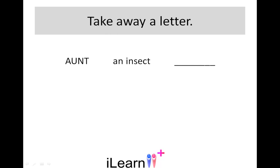Now look at this variation. You need to take away a letter instead of adding one. Remove one letter from the word in capitals to leave a new word. The meaning of the new word is given in the clue. The clue is an insect. Ant becomes ant.